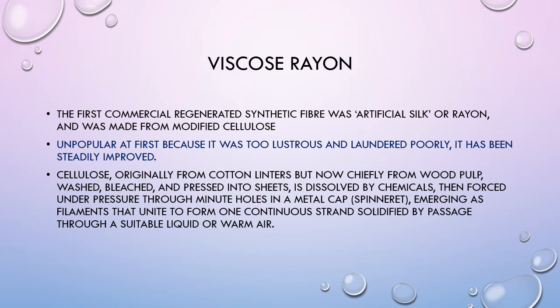Rayon laundered poorly at first, but over the years it has been steadily improved. Cellulose — originally from cotton linters but now chiefly from wood pulp — was washed, bleached and pressed into sheets, dissolved by chemicals, and then forced under pressure through minute holes in a metal cap, emerging as filaments that unite to form one continuous strand, solidified by passage through a suitable liquid or warm air. This is the basis for the viscose rayon process.